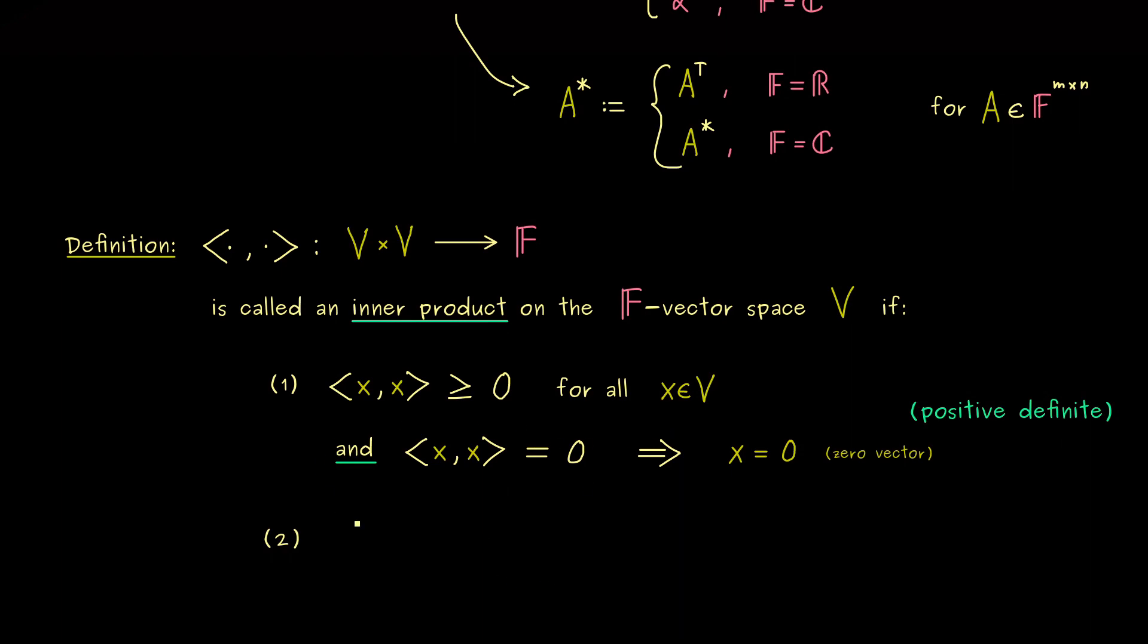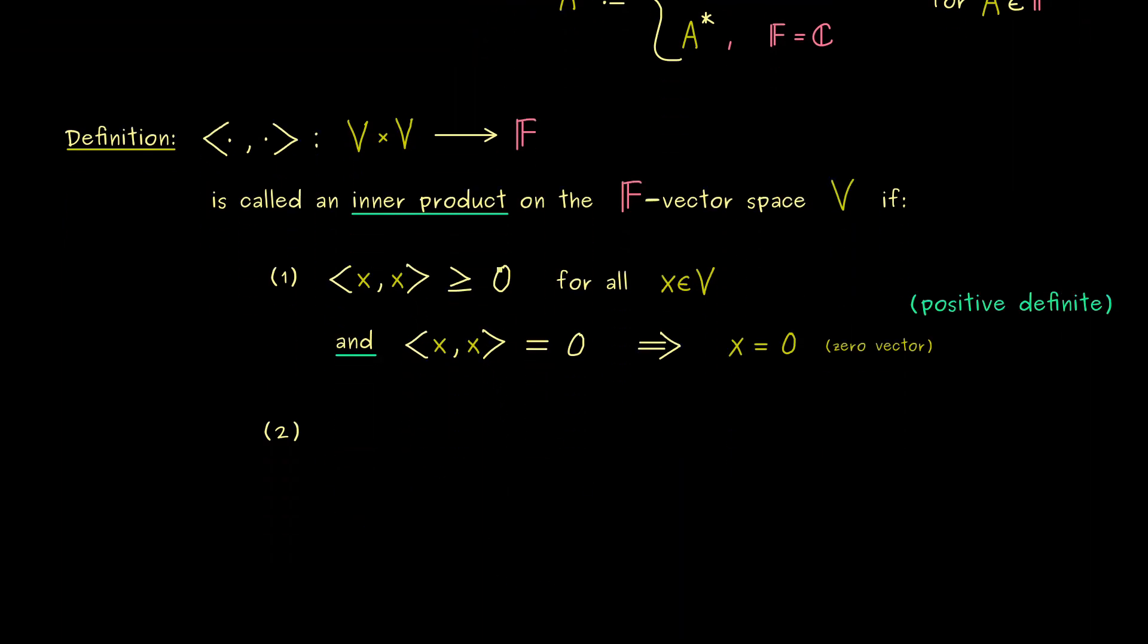Ok, then the second property is also not so hard. It says that the inner product should be a linear map in one of the entries. And there I can already tell you, I want that in the second argument. However, you also find mathematicians that do this definition in the first input. So please keep that in mind, there are two possibilities for the definition of an inner product and there is no general agreement which one is better. But you should know, for all my videos, you see the definition with the second argument.